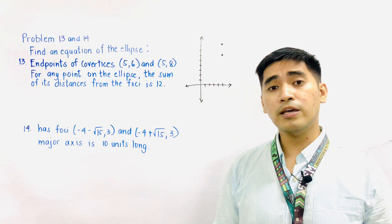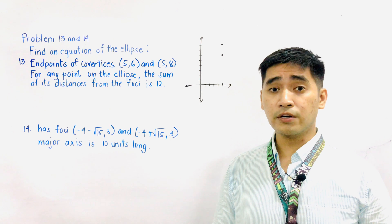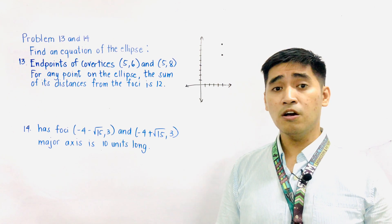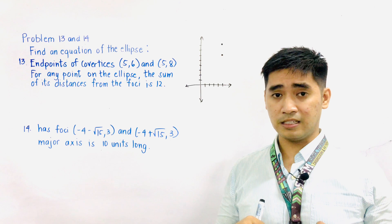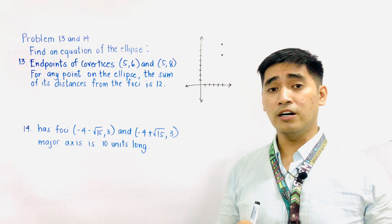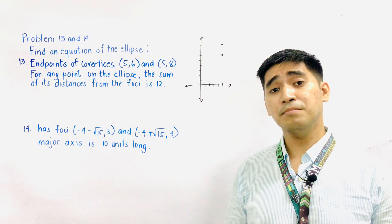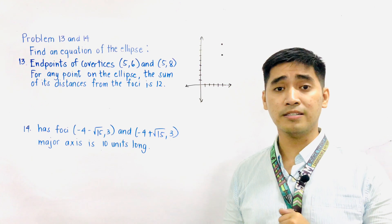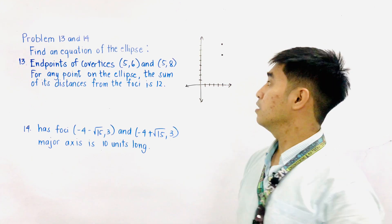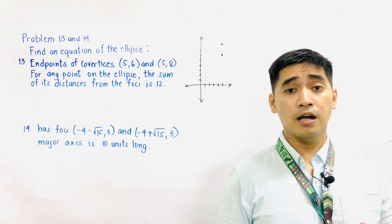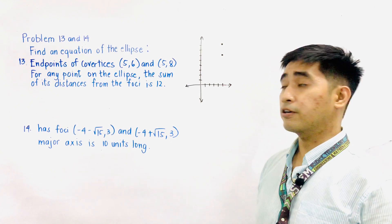We are given the endpoints of the co-vertices. Therefore, if the co-vertices lie on the horizontal, it is the minor axis. If the co-vertices lie on the vertical line, it is also the minor axis. And the major axis is the opposite — or the perpendicular axis — of the minor axis.